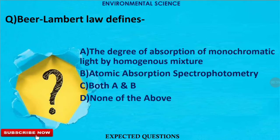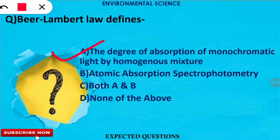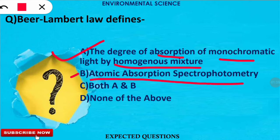The first question is: what does the Beer-Lambert law define? The correct option is option A. The Beer-Lambert law defines the degree of absorption of monochromatic light by a homogeneous mixture. Some may be confused because atomic absorption spectrophotometry uses the Beer-Lambert law principle, but that is not the definition of Beer-Lambert law. So the correct option is A.